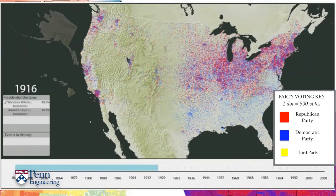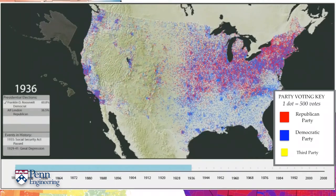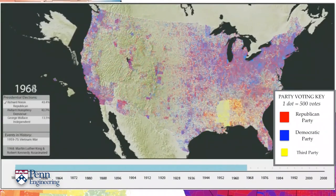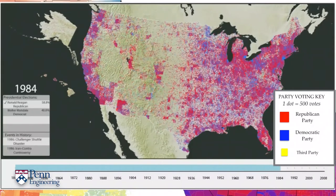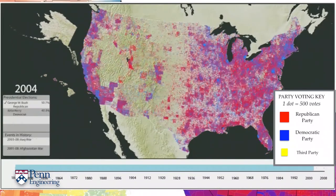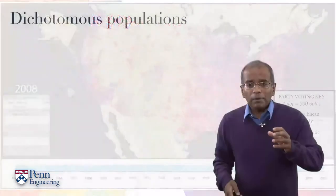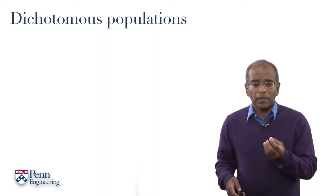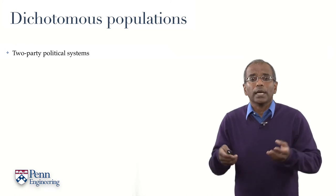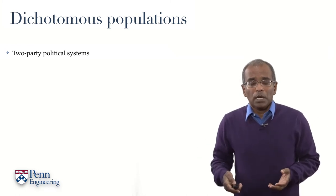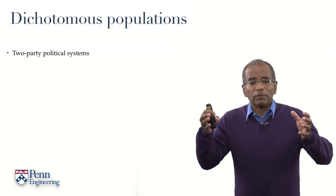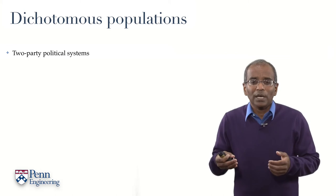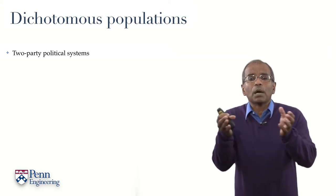The two dominant political parties in the U.S. at this time are the Republicans and the Democrats, and as you see across the montage of images, the density of Republican and Democrat concentration has changed quite dramatically in time. The voting populace of a country is split into two primary subpopulations.